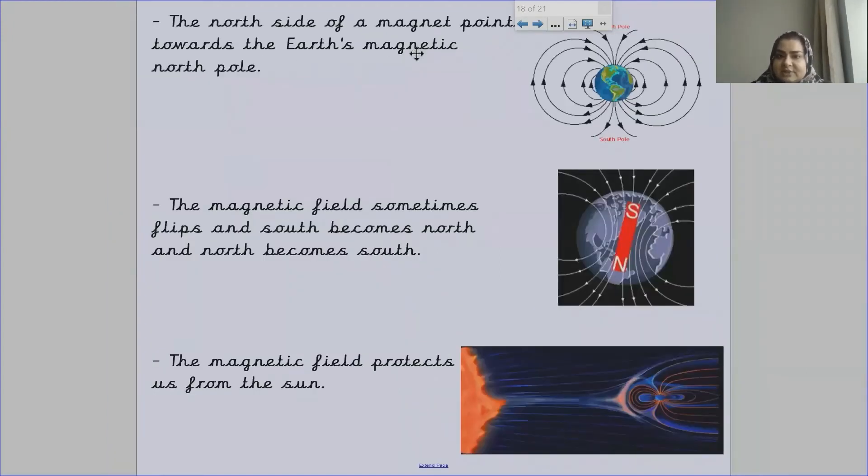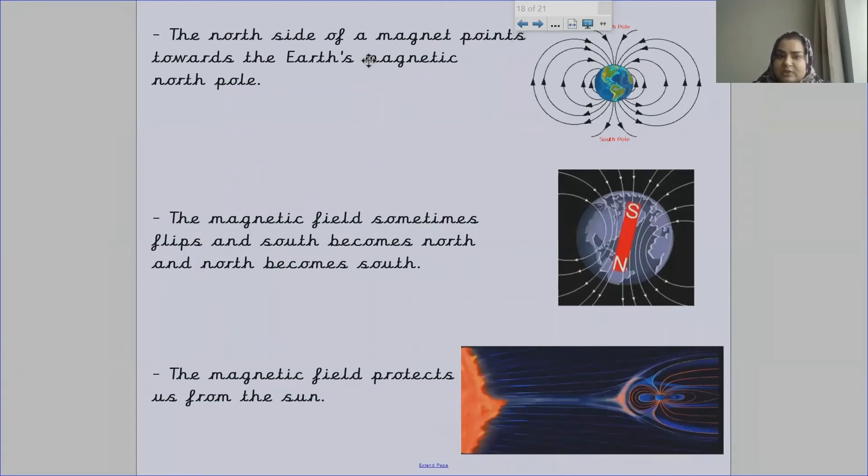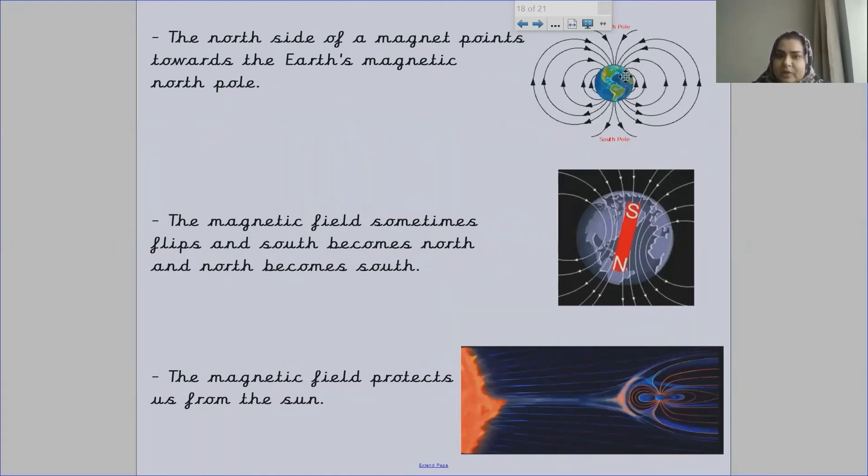The north side of the magnet points towards Earth's magnetic north pole. If you look at a magnet, the north side of a magnet will always point towards a magnetic north pole. For example, when you look at compasses...